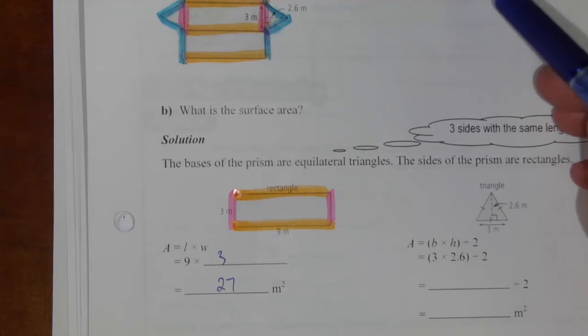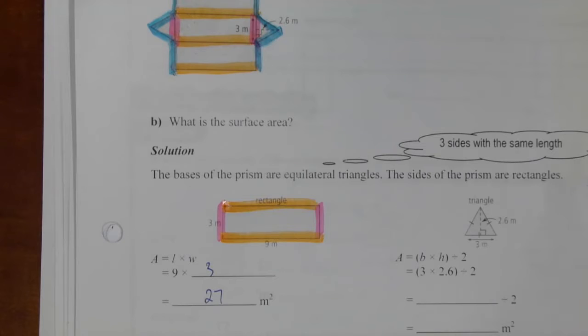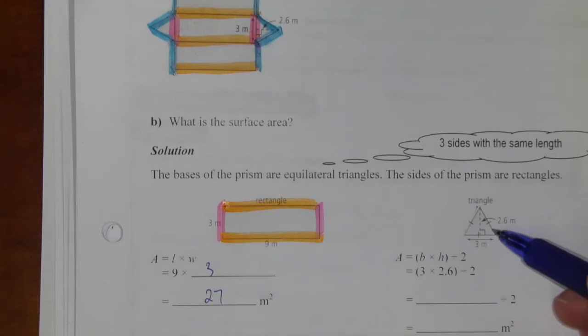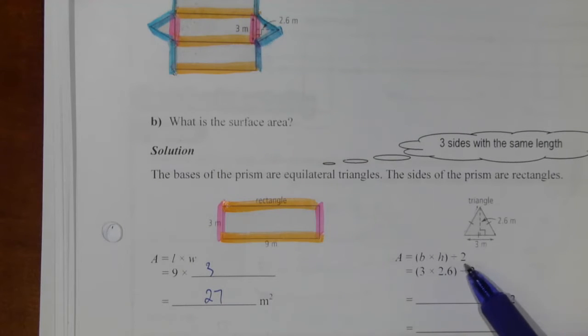Now for the triangles, we've got two triangles that are exactly the same, one on each end of the prism. They're 3 meters, and the height is 2.6 meters. So, area of a triangle is base times height divided by 2. The base is 3.